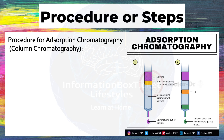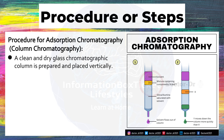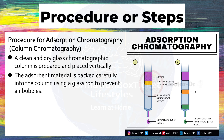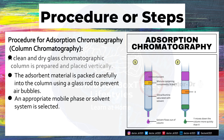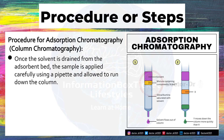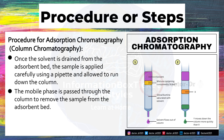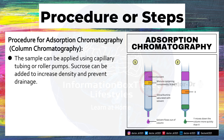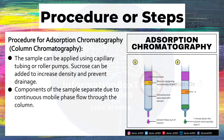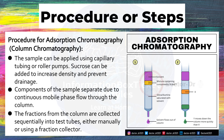Procedure for Column Chromatography: A clean, dry glass chromatographic column is prepared and placed vertically. The adsorbent material is packed carefully into the column using a glass rod to prevent air bubbles. An appropriate mobile phase or solvent system is selected. Once the solvent is drained from the adsorbent bed, the sample is applied carefully using a pipette and allowed to run down the column. The mobile phase is passed through to remove the sample from the adsorbent bed. Sucrose can be added to increase density and prevent drainage. Components separate due to continuous mobile phase flow, and fractions are collected sequentially into test tubes manually or using a fraction collector.